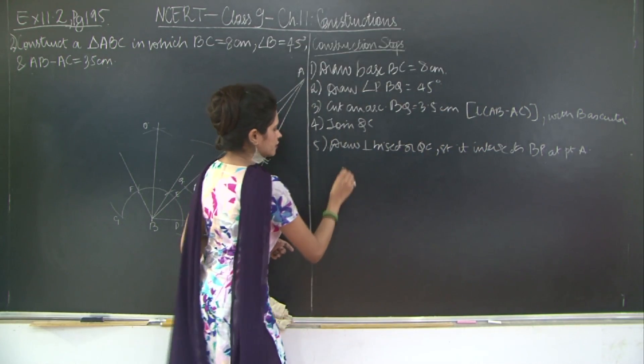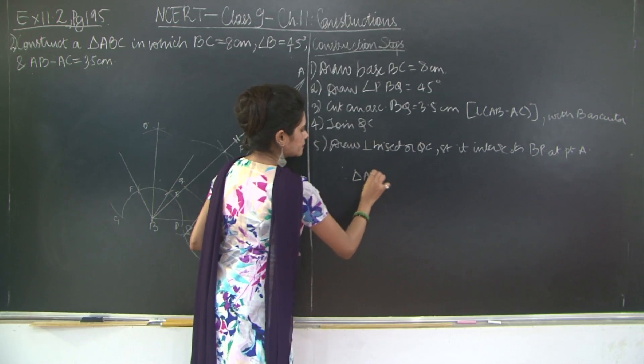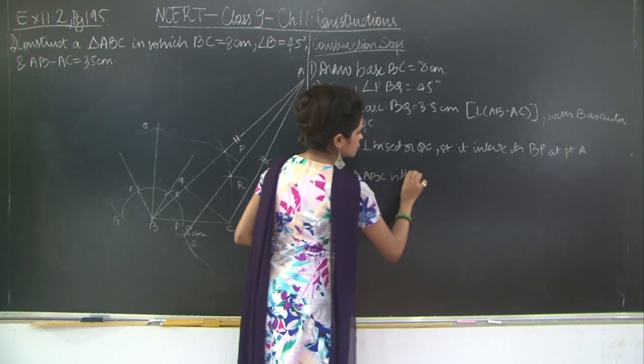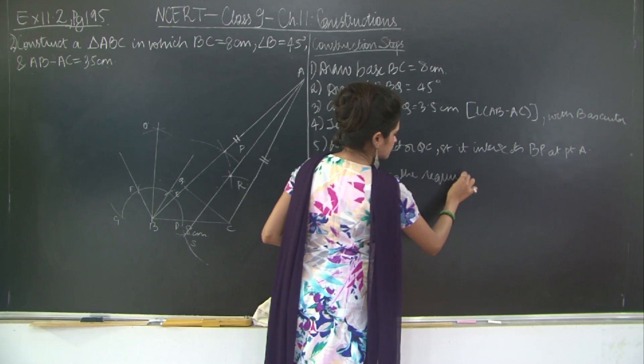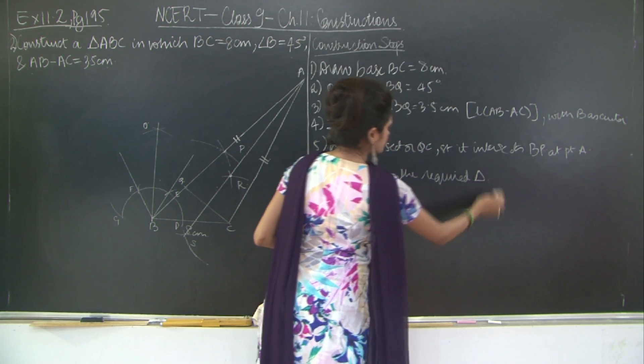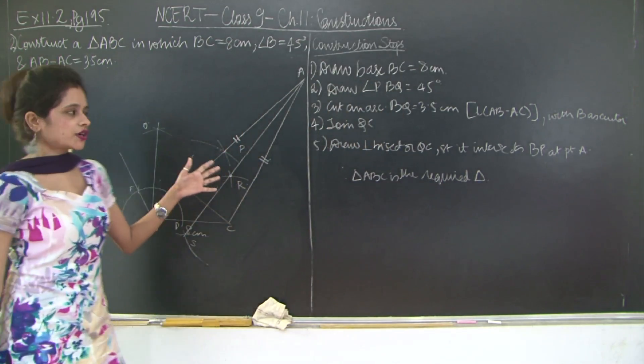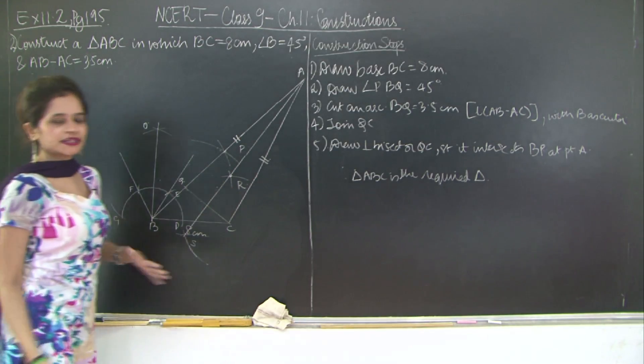Therefore, triangle ABC is the required triangle. So this is your construction. These are your steps. Please take a look.